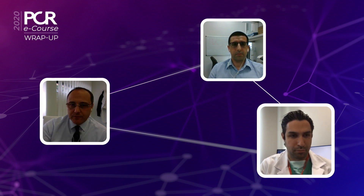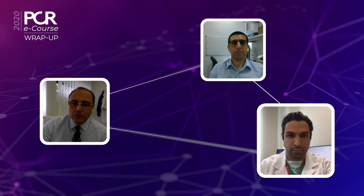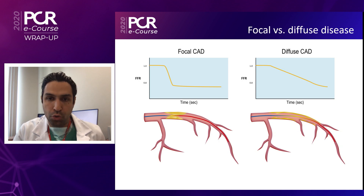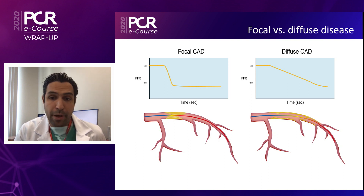Our understanding of physiology-guided decision-making is going beyond the simple indication for revascularization — whether PCI or CABG — and physiology is being used more and more to guide PCI itself. In the early era, we focused on a single FFR value at the distal part of the coronary vessel. Adding a pullback maneuver adds another dimension: the pullback curve allows you to determine whether disease is focal or diffuse, where the precise location of the functional pressure drop is, and the extension of pressure losses. The identification of whether CAD is focal or diffuse has therapeutic and prognostic implications.